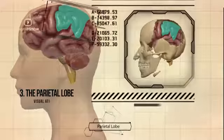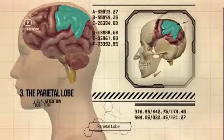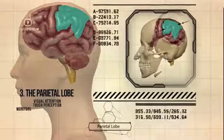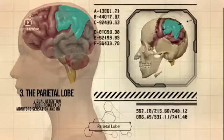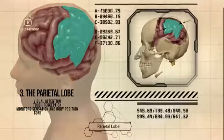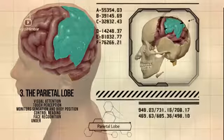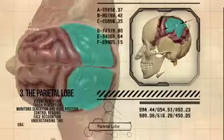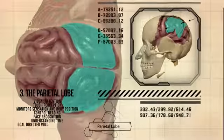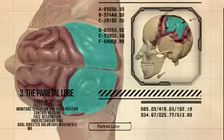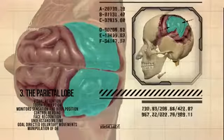The parietal lobe is responsible for visual attention, touch perception, monitoring sensation and body position, controlling reading, face recognition, understanding time, goal-directed voluntary movements, and manipulation of objects.